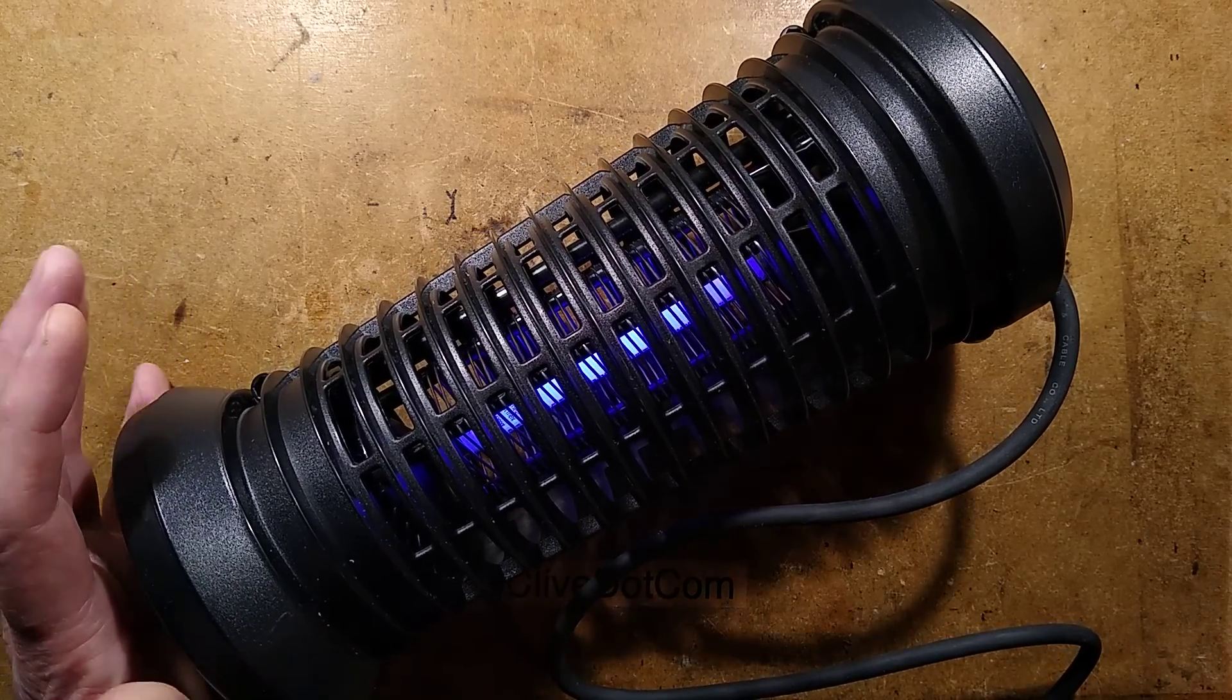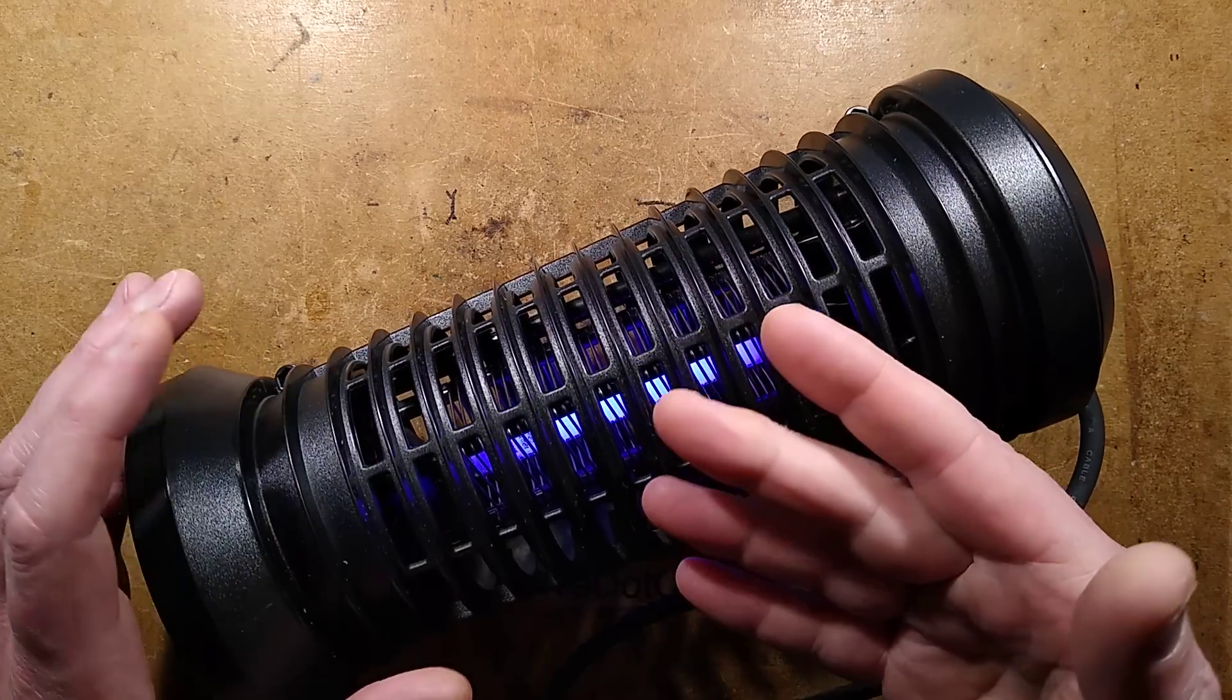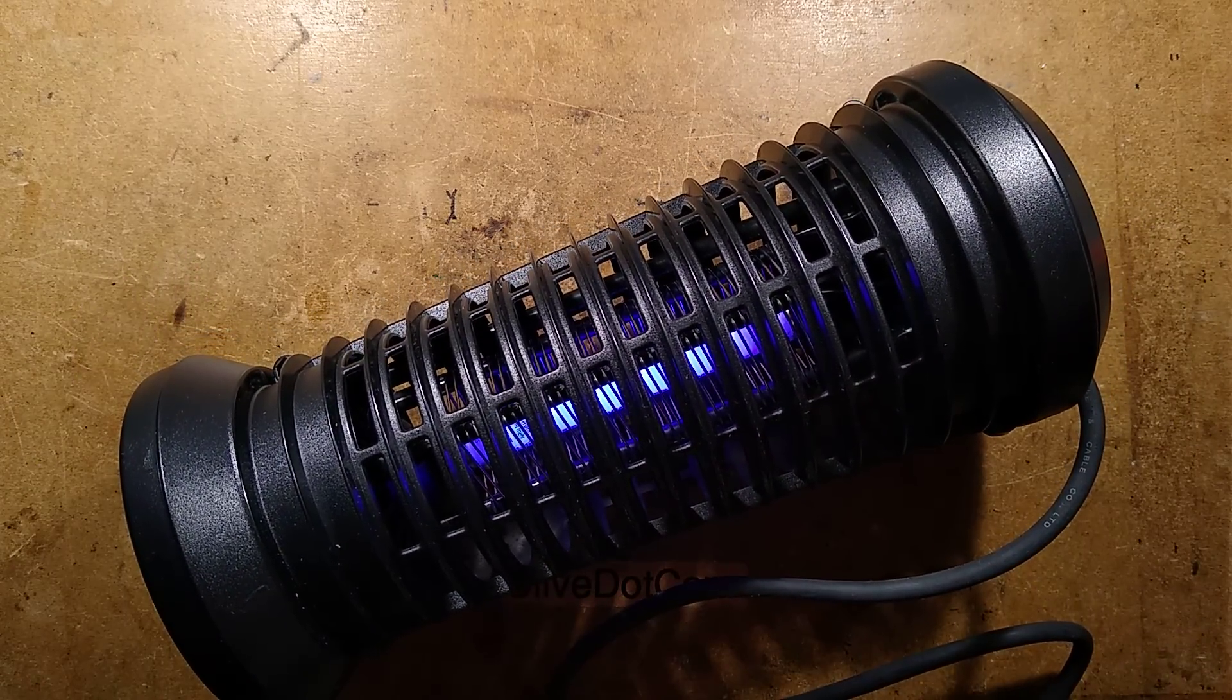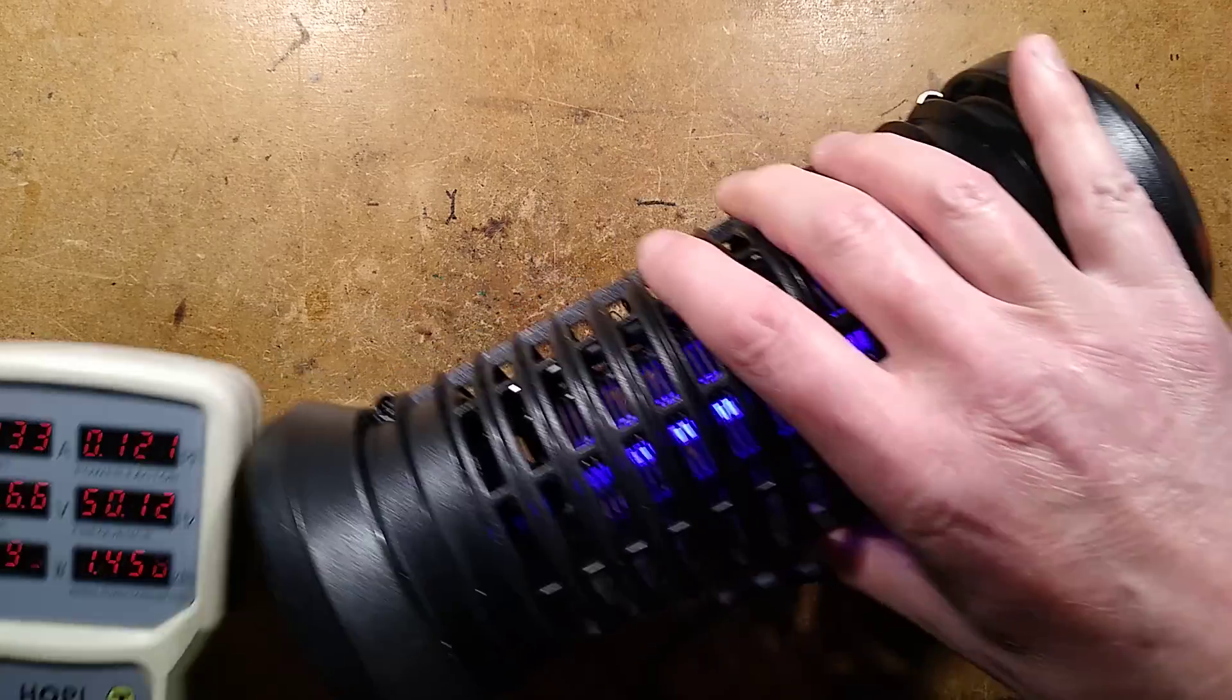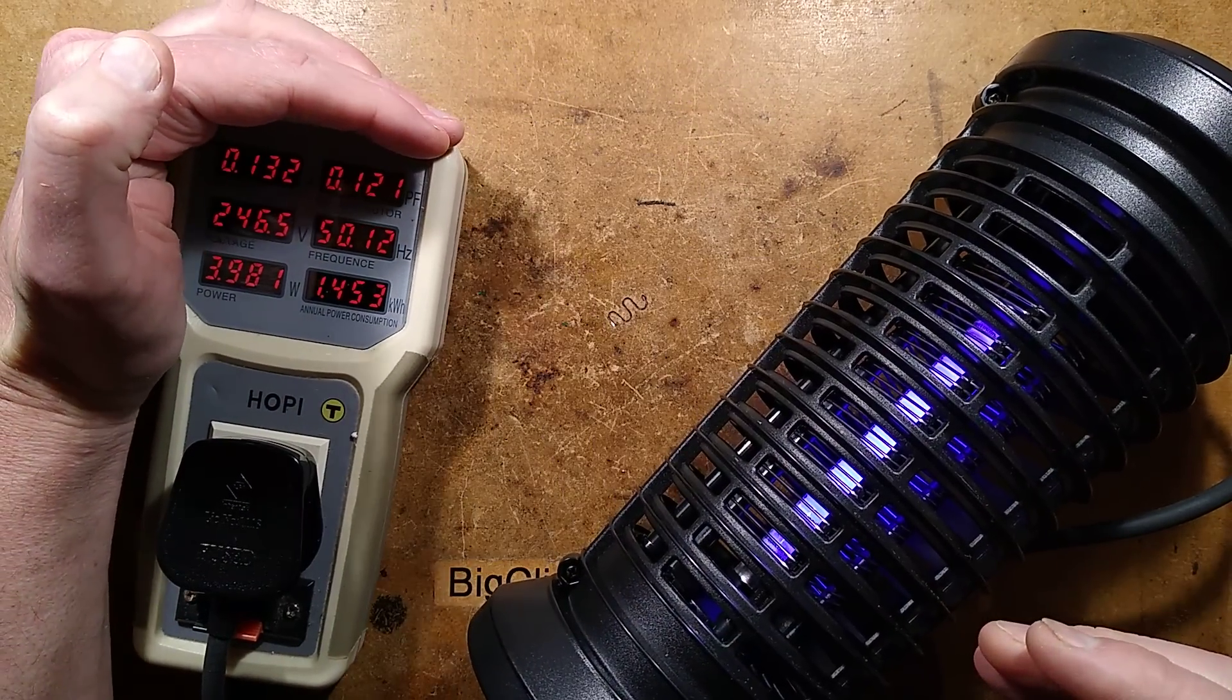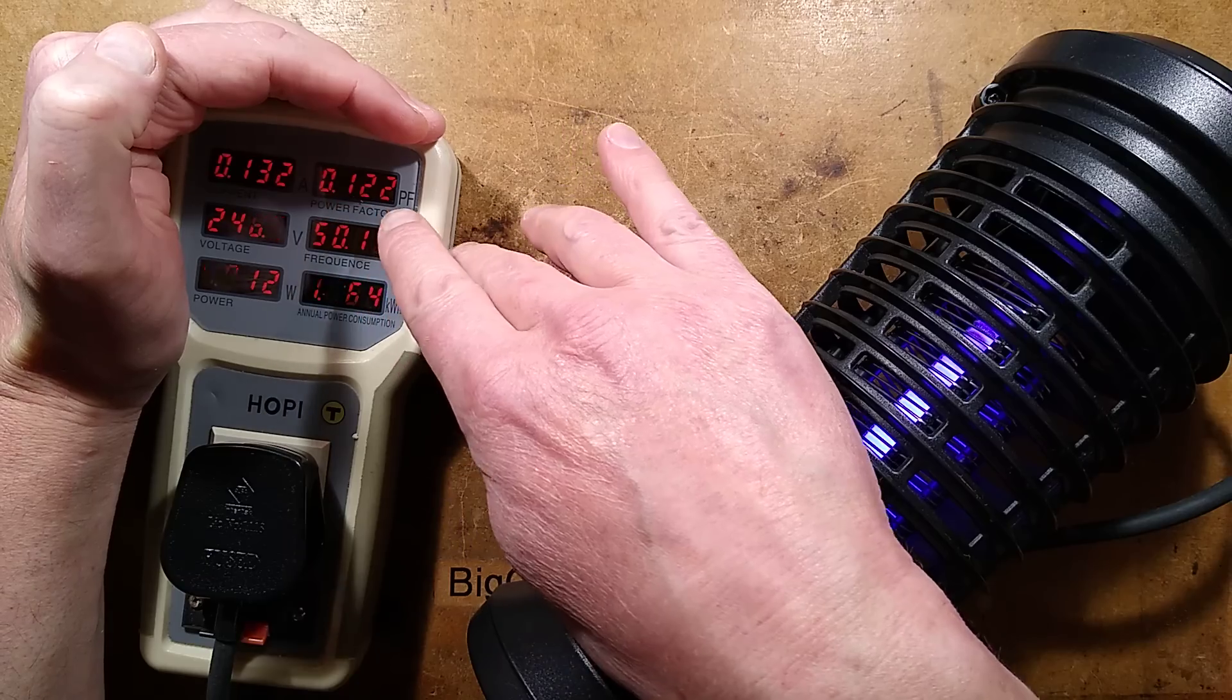Initially I was hoping this was going to be using a high frequency traditional electronic ballast for the tube, but if we take a look at the power monitor here, we can see that the power is roughly about 4 watts and the power factor is just 0.120.